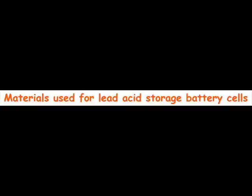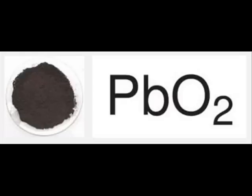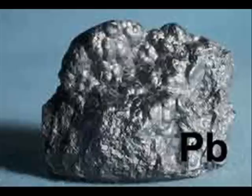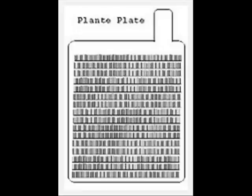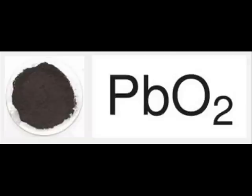The main active materials required to construct a lead acid battery are lead peroxide, sponge lead, and dilute sulphuric acid. The positive plate of lead acid battery is made of lead peroxide. This is a dark brown, hard, and brittle substance.